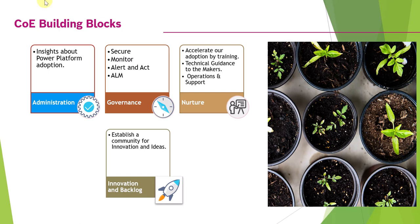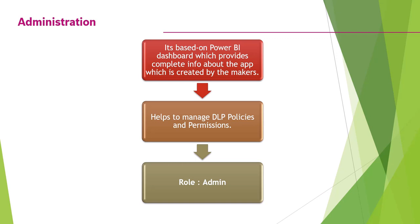The COE building blocks — what the COE is built upon — consist of four areas: administration assets, governance assets, nurture assets, and innovation and backlog assets. These four are the combination of the COE Starter Kit. When you work with it, you get all the apps, solutions, and flows with respect to administration, governance, nurture, and innovation and backlog.